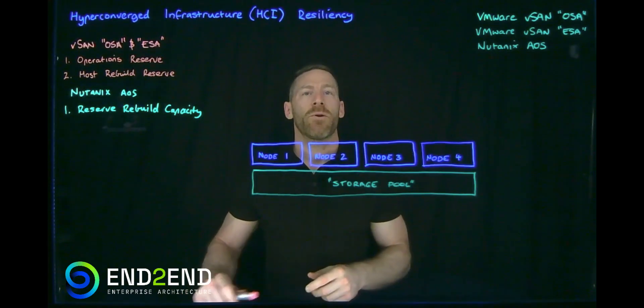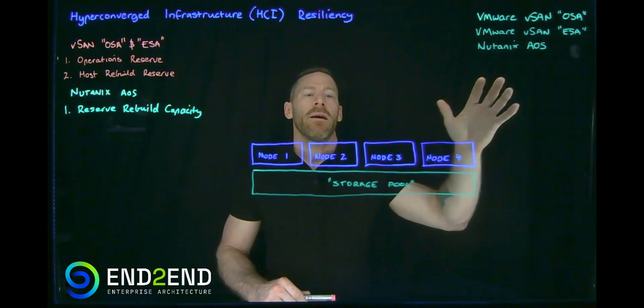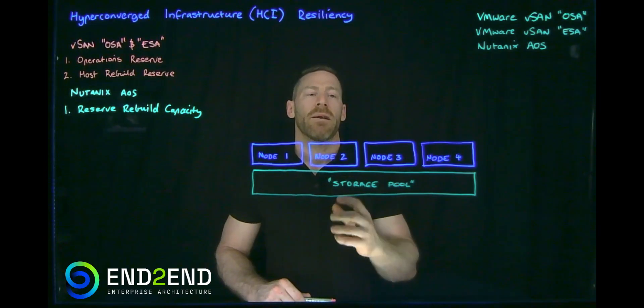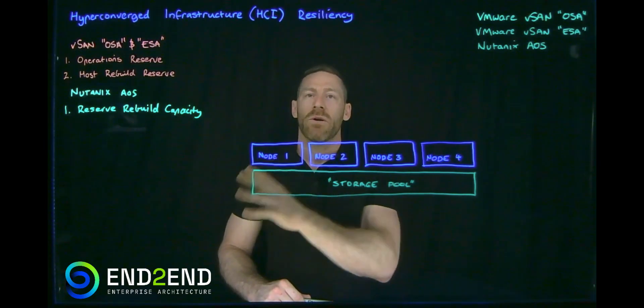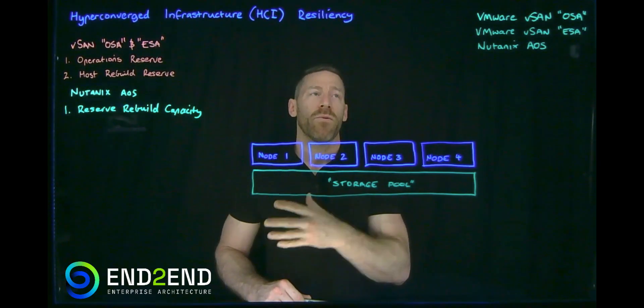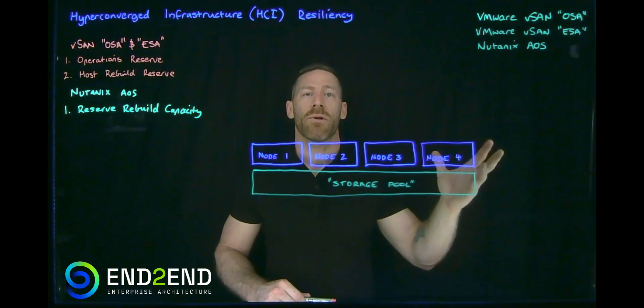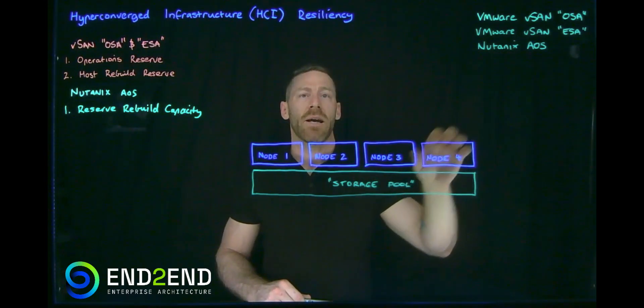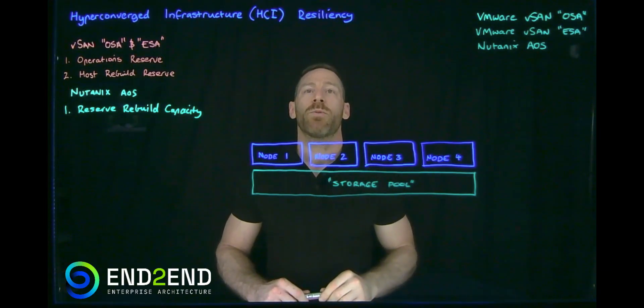Okay, let's look at this typical four node example. If we're deploying VMware OSA, we don't have this construct of a storage pool. We have disk groups. Now disk groups are a bit less flexible, a bit less resilient than the storage pool architecture, so what we're going to talk about today is even more critical for those who are still on or are considering deploying OSA. But we're going to focus for this presentation on ESA and Nutanix AOS, which both deploy a similar storage pool architecture.